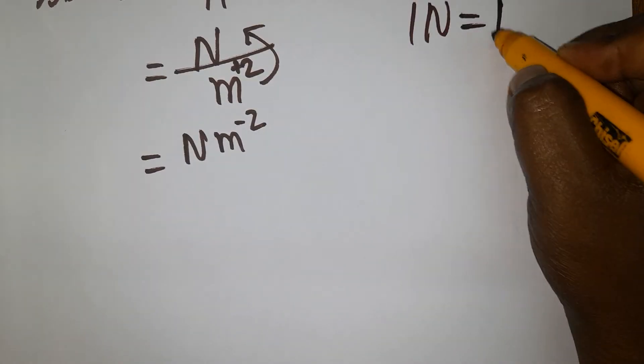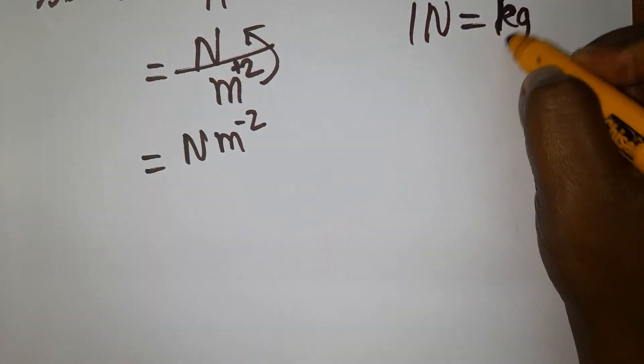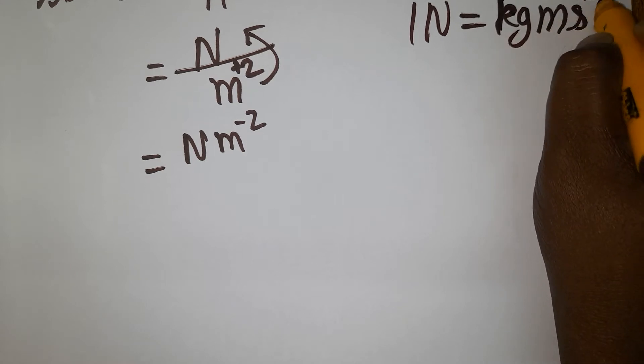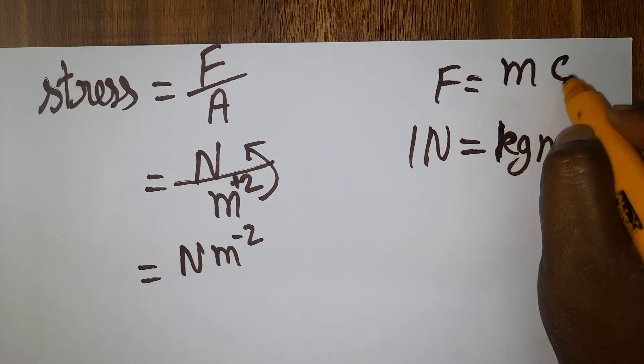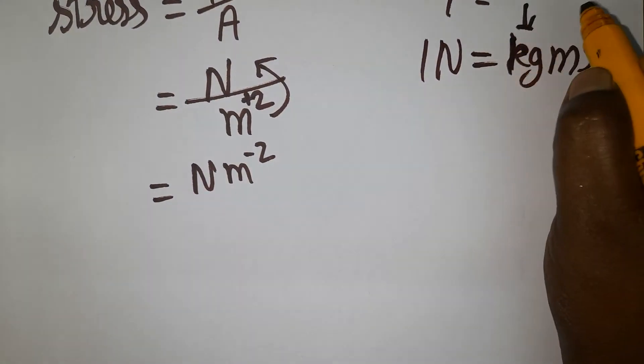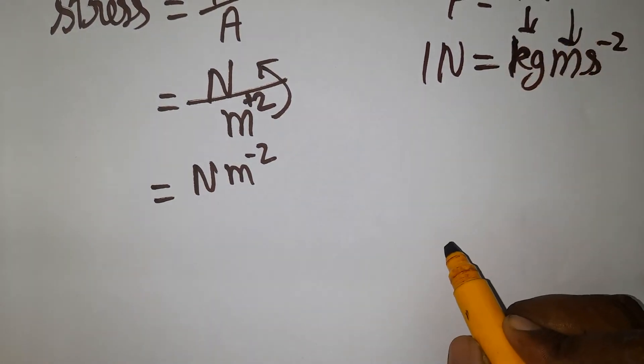What is 1 Newton? 1 Newton is kg meter second minus 2, because force equals mass times acceleration. kg is for mass, acceleration is meter second minus 2.